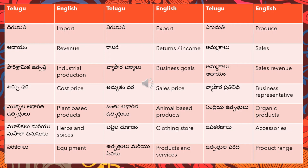'Vyaapar lakshalu' means business goals — 'lakshalu' means goals, so 'vyaapar lakshalu' means business goals. To recap: 'ammakalu' means sales, 'aadayon' means revenue, so 'ammakalu aadayon' together covers sales and revenue.